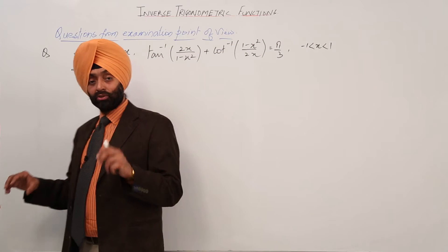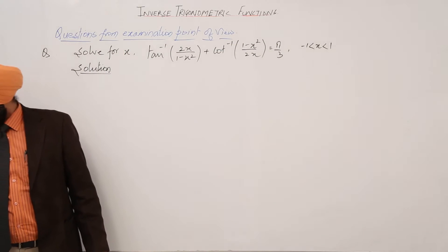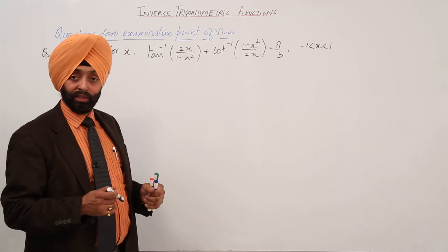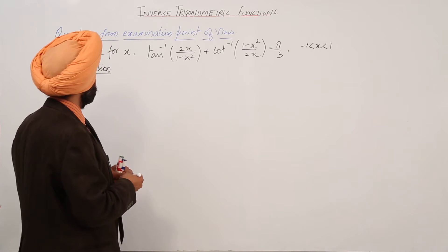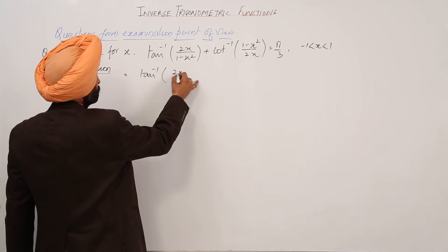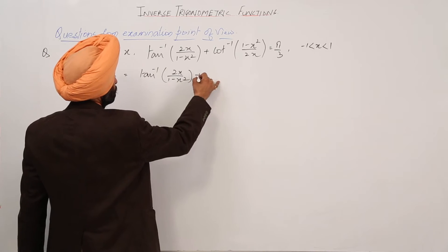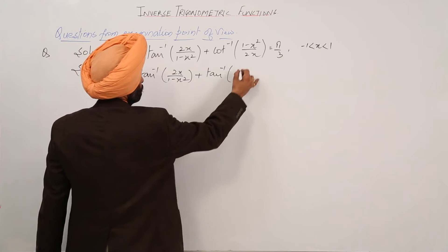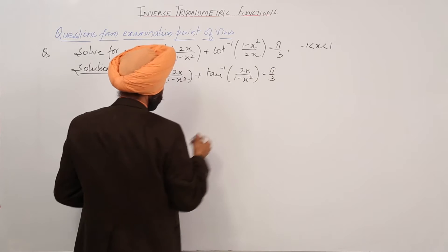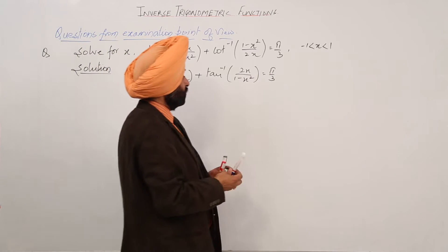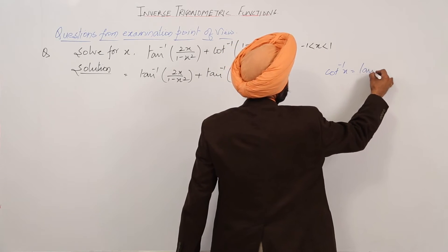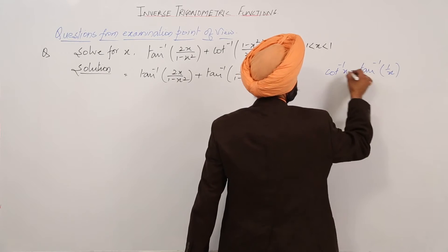Now you can do this question by substitution also. For the substitution part, if we are putting x equal to sin theta or cos theta, you can just try it. Now we are starting this question. I have used the formula: cot inverse x is equal to tan inverse (1 upon x).